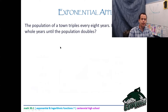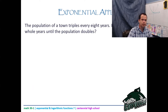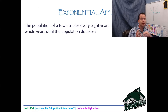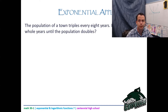New problem: a small town's population triples every eight years. How many whole years until the population doubles? Notice I never gave you a starting population — that's fine, it doesn't matter. I'll start at a population of 1 and end at 2. It just has to work mathematically, not biologically.